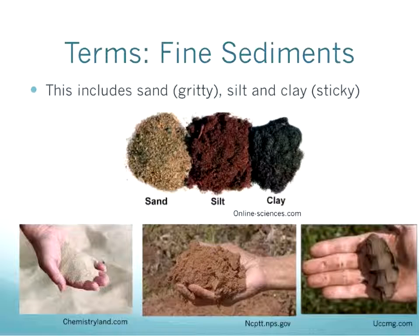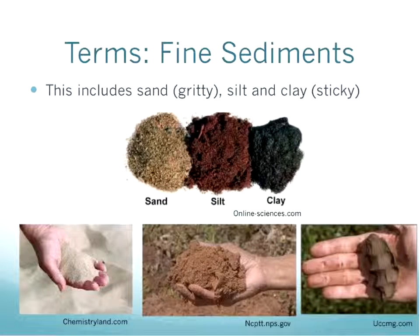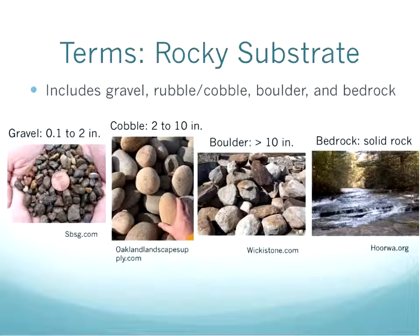Next, fine sediments versus rocky sediments. Fine sediments are sand, silt, and clay — very small particle sizes. The rocky substrate includes things that are bigger: gravel (0.1 to 2 inches in diameter), cobbles (2 to 10 inches), boulders (greater than 10 inches), and bedrock — solid rock on the bottom of the stream.